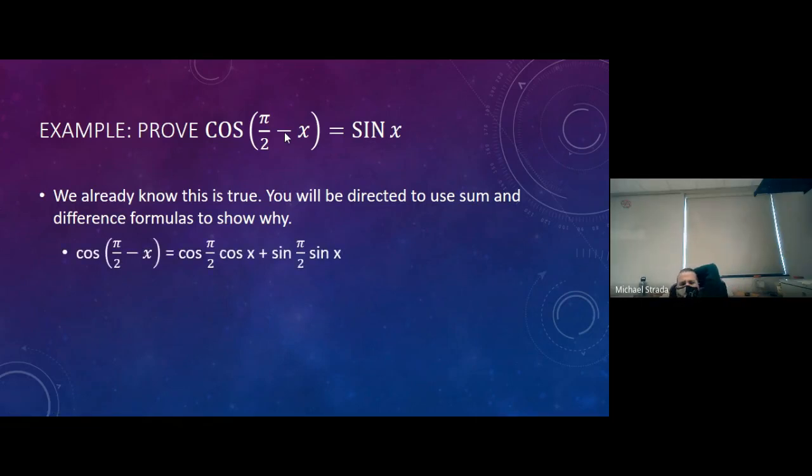So it's cosine π over 2 cosine x plus sine π over 2 sine x. So with cosine, the cosines stay together, the sines stay together, and the sign, S-I-G-N, in between them is the opposite of what the original problem was.